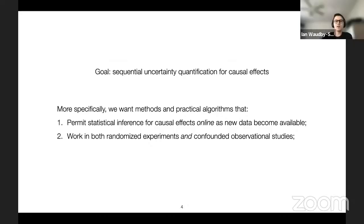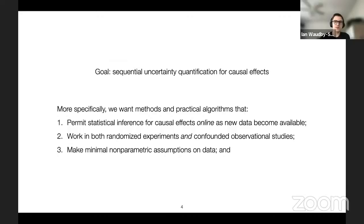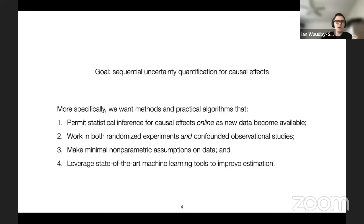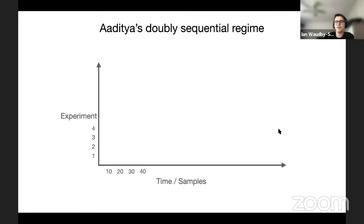Sometimes it might not be feasible or ethical to perform a randomized experiment, so we want methods that work in observational settings too. We want to make minimal non-parametric assumptions — no linearity, no Gaussian errors. And finally, we want to leverage state-of-the-art machine learning tools to improve estimation, both for better estimators of causal effects and to get tighter confidence sequences.